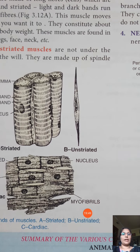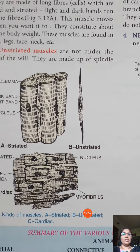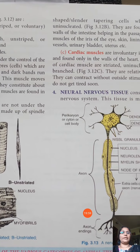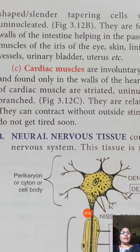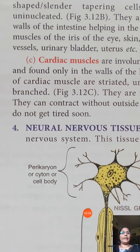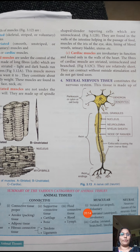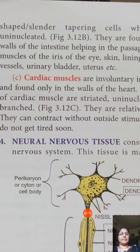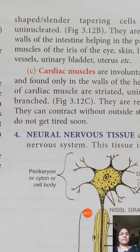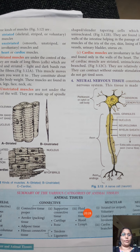Unstriated muscles are involuntary muscles found in the intestine, iris of the eye, skin, lining of blood vessels, urinary bladder, and uterus — parts that do not move according to our will.